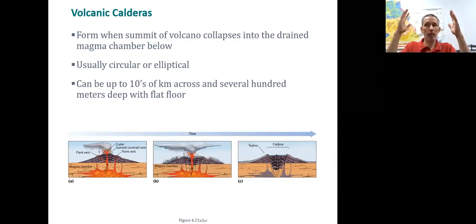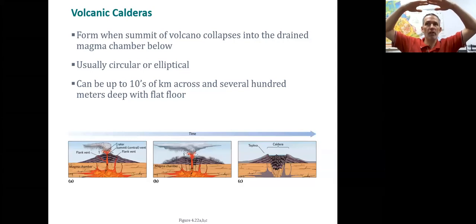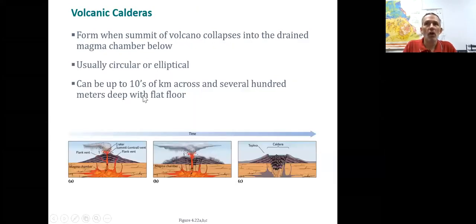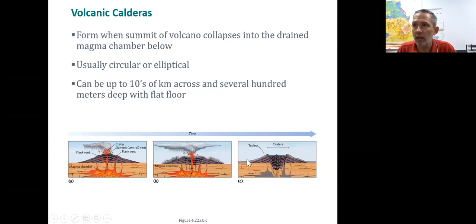After lava has erupted, what can be left behind is a cavity underneath the magma chamber. If you have this cavity, the weight of the overlying rocks causes a subsidence, creating a cauldron called a caldera. One of the most famous calderas is Crater Lake in Oregon, where an entire lake has developed on top of a volcano — that caldera is now filled with water.